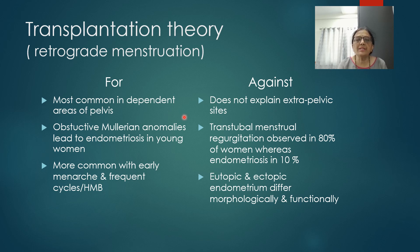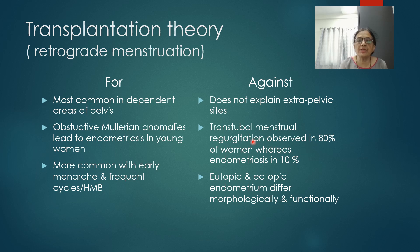Points which go against this transplantation theory: it cannot explain extrapelvic sites of endometriosis. Trans-tubal menstrual regurgitation is observed in approximately 80% of women, whereas the prevalence of endometriosis in general reproductive-age women is around 10%, so retrograde menstruation alone cannot explain the occurrence of endometriosis. Also, eutopic and ectopic endometrium differ morphologically and functionally, which also goes against Sampson's theory.